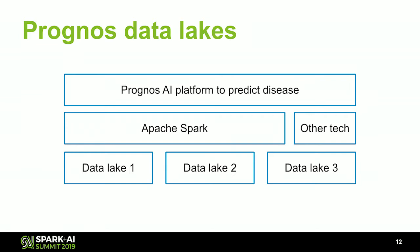Now we're going to transition into the data lake part of this talk. I'm going to give a high-level overview of how we're architecting things at Prognose. Prognose has a data lake with about 23 billion lab test records. Lab data is extraordinarily messy with a lot of free text fields, so Spark is a great technology for working with our data. We have data lake one, two, and three as the basis of our technology, and on top of that we're building a predictive AI platform to predict disease earliest with lab data.